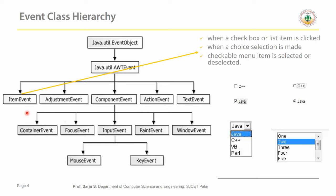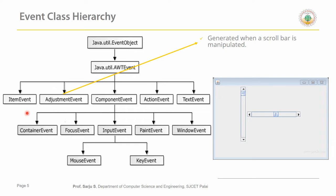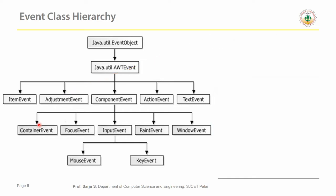The second event class is the AdjustmentEvent. The AdjustmentEvent is mainly associated with the scrollbar. When anything happens to a scrollbar, it is handled by the AdjustmentEvent. Scrollbar movement and scrollbar changes are all managed by the AdjustmentEvent. So ItemEvent handles checkboxes and selected items, while AdjustmentEvent handles scrollbars.